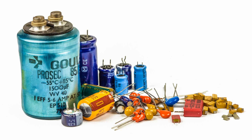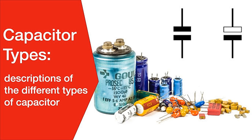Detuned capacitors, also known as harmonic or tuned harmonic filter capacitors, are specialized power factor correction capacitors designed to address the issue of harmonic distortion in electrical systems. They are specifically designed to reduce the effects of harmonic distortion. Harmonics are unwanted frequencies that can cause voltage distortion, overheating, and inefficiencies in the system. Detuned capacitors are tuned to a frequency slightly different from the harmonic frequencies present in the system, effectively mitigating their effects.